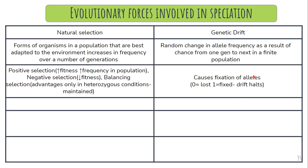Genetic drift causes fixation of alleles. If the allele frequency increases and reaches one, that particular allele gets fixed in the population and the process of genetic drift stops. However, if the frequency goes to zero, that allele is lost. For example, if all individuals become black, black is the fixed allele, and the white allele is lost altogether.